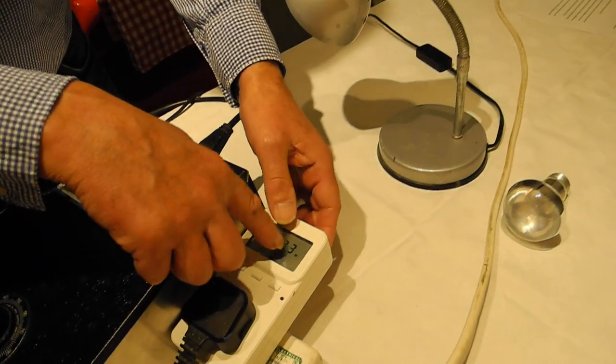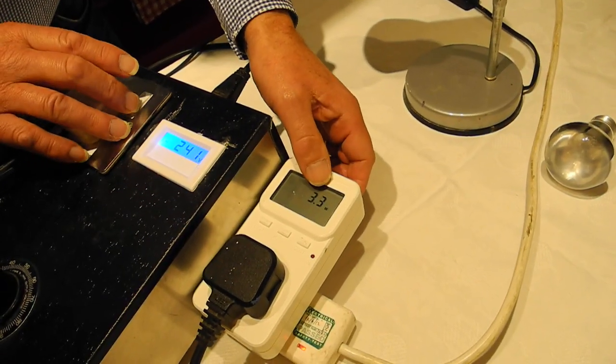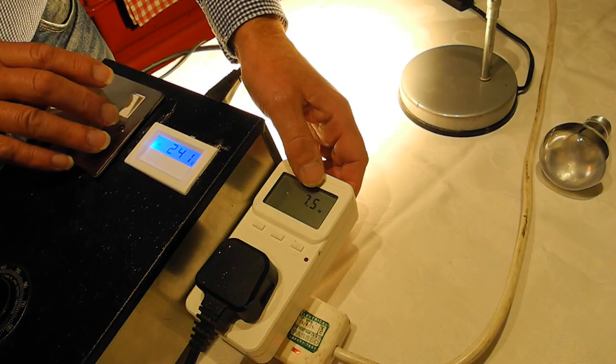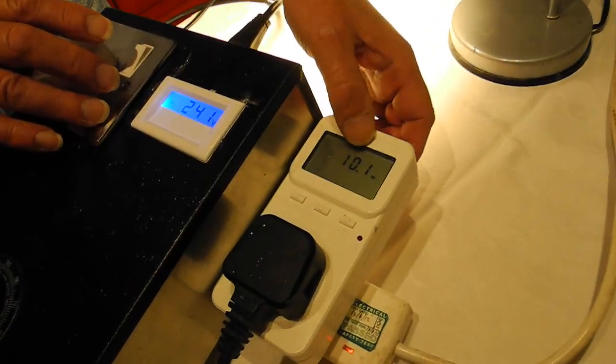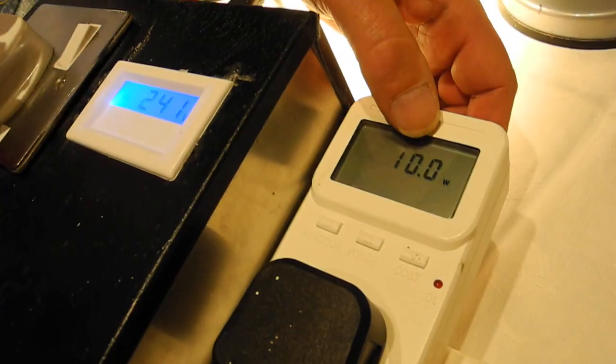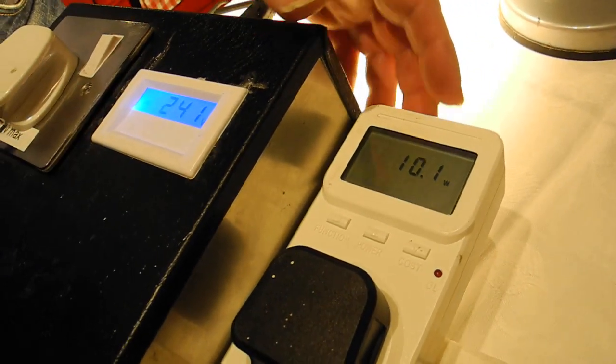We start with our background 3.3 watts of consumption. Turn the lamp on and just let it register. There we are. The lamp is using about 10 watts now at 241 volts.